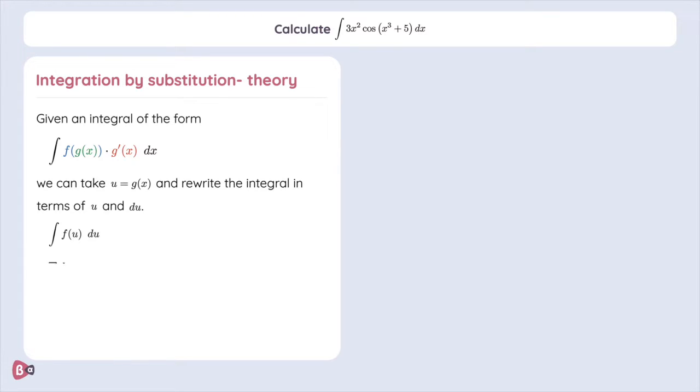And because we know how to integrate f, we just get its antiderivative as a function of u plus the additive constant c, which appears because we're doing an indefinite integral. Now, we're not done, because we want to express our answer in terms of the original variable x. And so, we replace u by g of x to obtain our final answer.